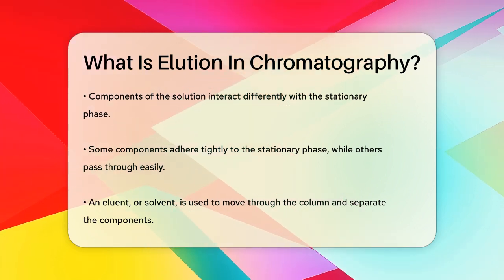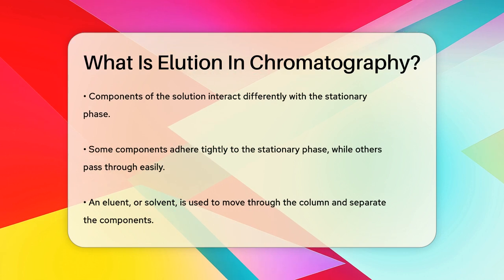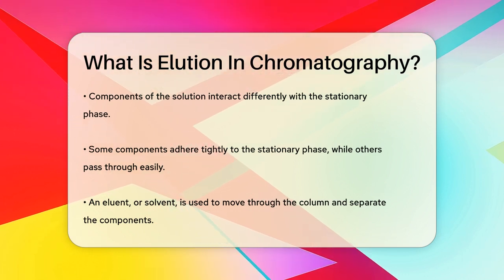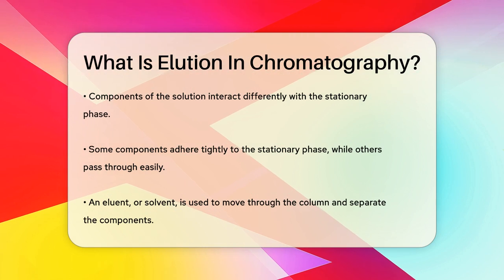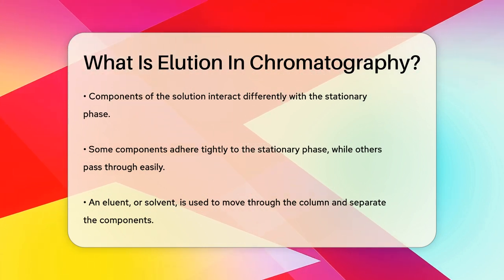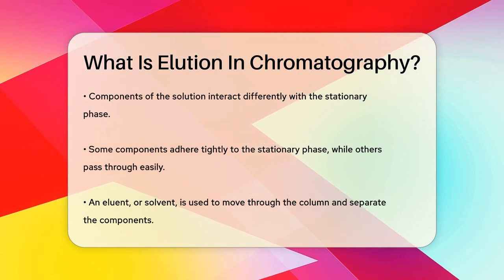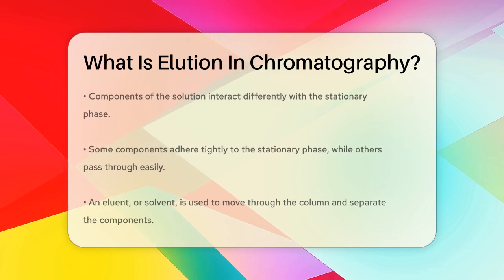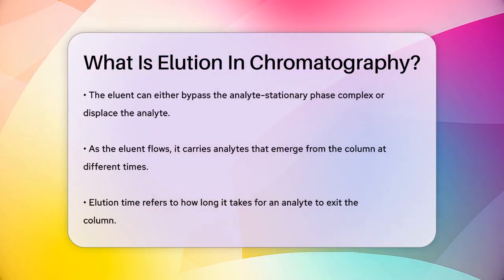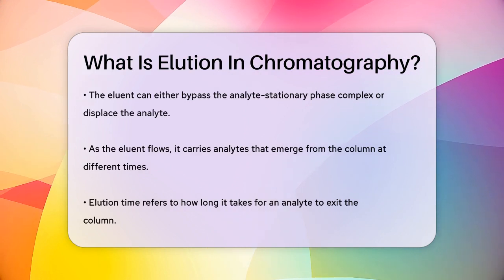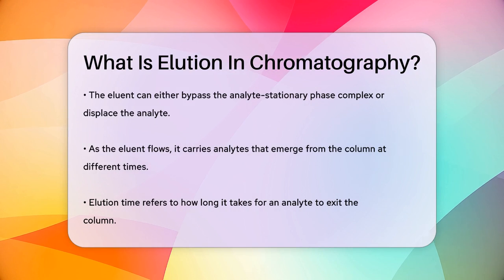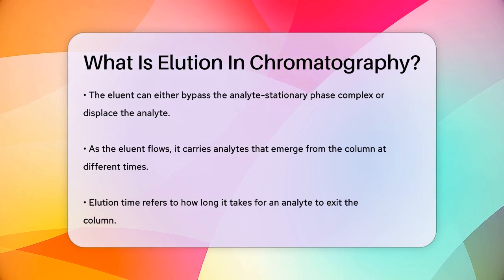To separate these components, a solvent known as the eluent is passed through the column. This eluent can either pass by the analyte-stationary phase complex or displace the analyte by binding to the stationary phase itself. As the eluent moves through the column, it carries the analytes with it, and these analytes emerge from the column at different times, depending on how strongly they interacted with the stationary phase.